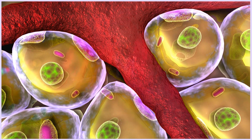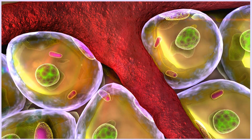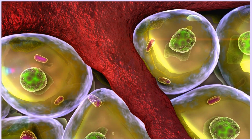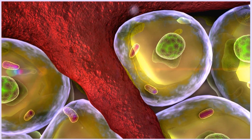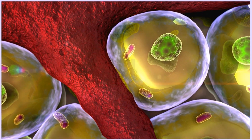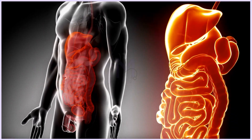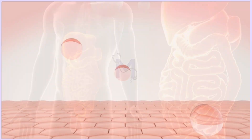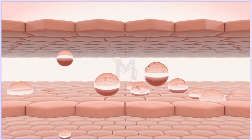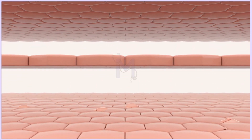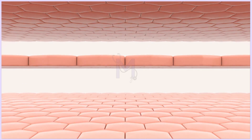The cell is the smallest structural and functional unit of the body, having the ability to live on its own and making up all the tissues and organs of the body. For example, one inch of skin has approximately 19 million cells. Cells undergo a series of changes as part of the cell cycle, leading to its growth and division.